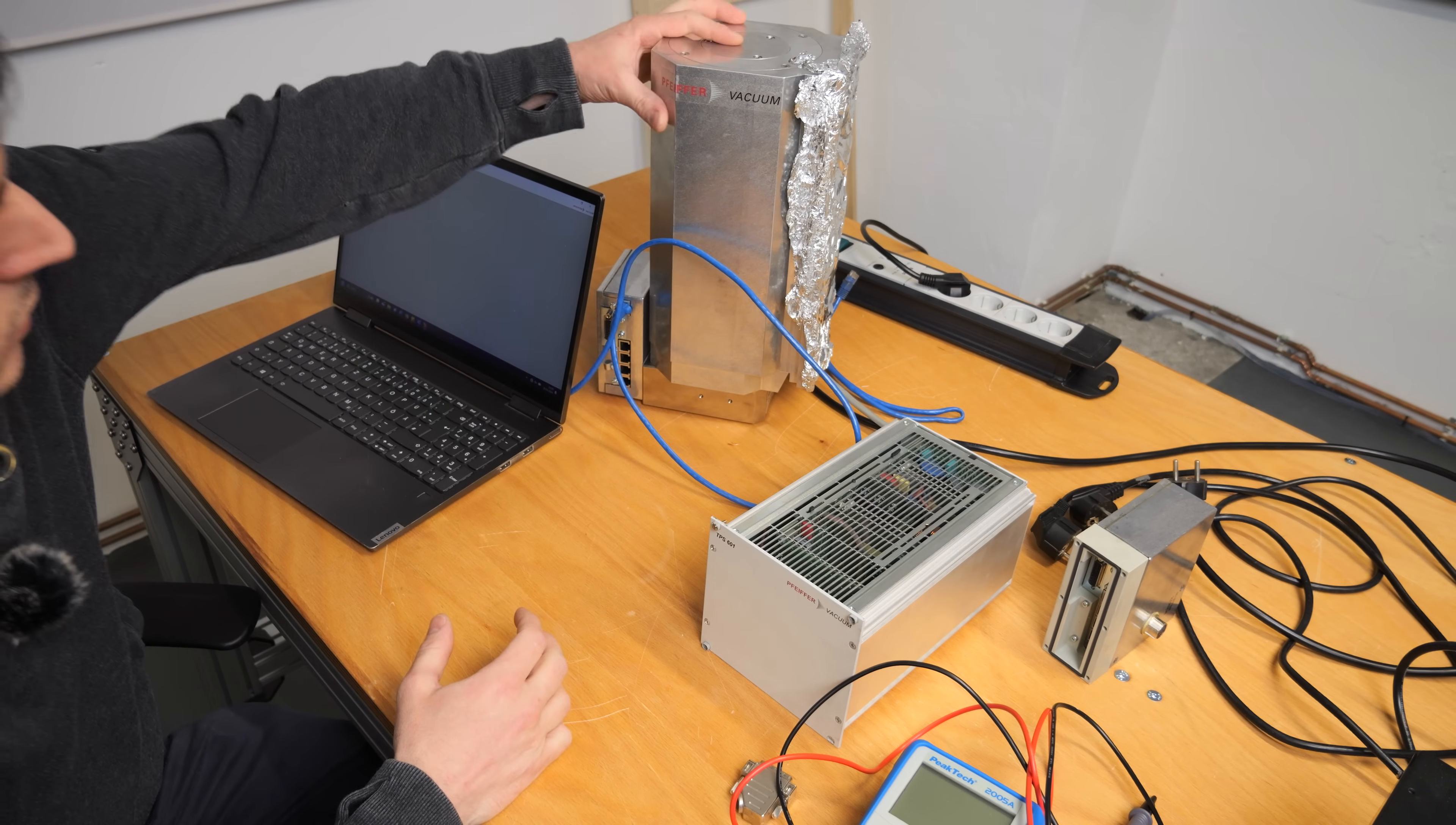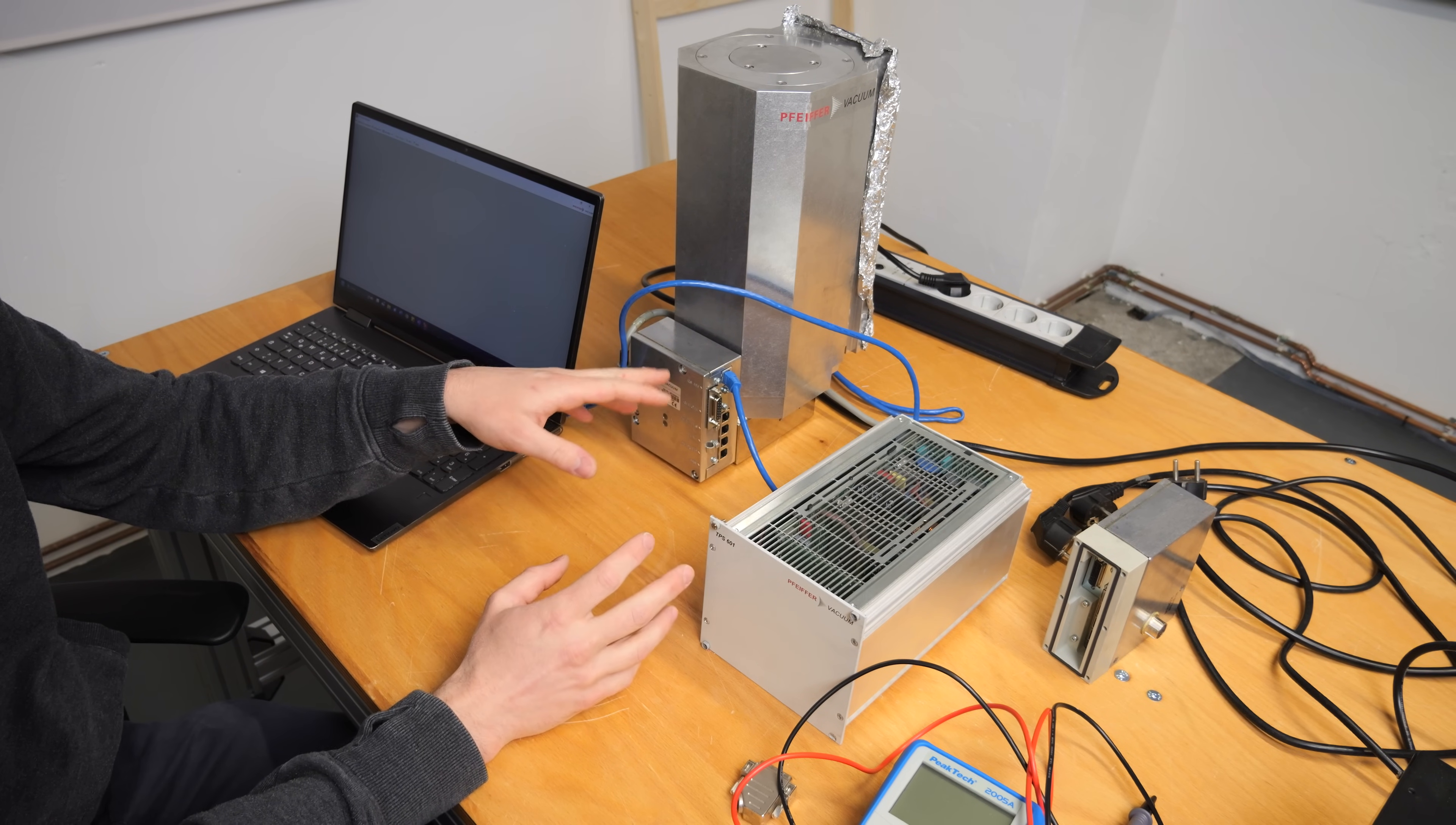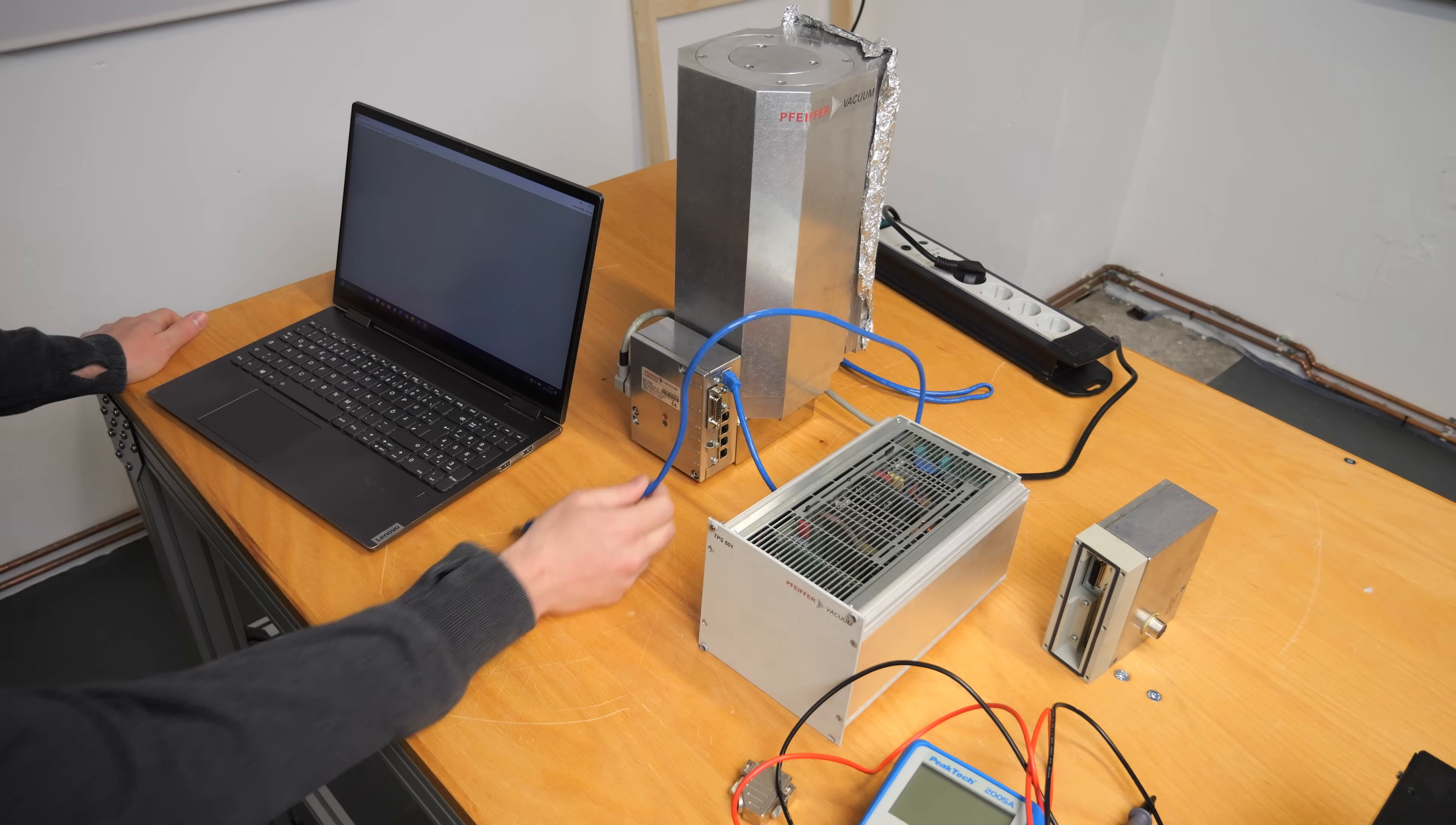I knew that the controller provides an error code via its RS485 interface. But lacking a device like an Omnicontrol to read this code, I didn't attempt it at first. However, a helpful user from the vacuum discord server pointed me to Pfeiffer's software called TurboViewer and assisted me finding it on Pfeiffer's website. Many thanks for that.